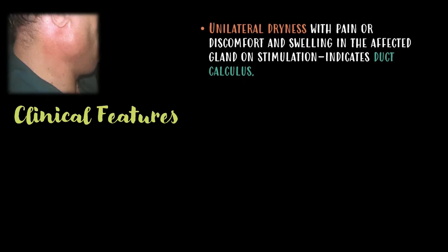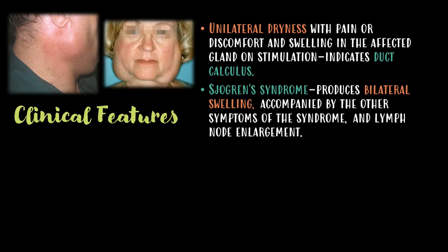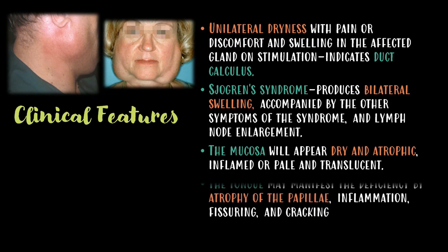The clinical features include unilateral dryness with pain or discomfort and swelling in the affected gland on stimulation, indicating the presence of duct calculus. In the case of Sjögren's syndrome, there is bilateral swelling accompanied by the other symptoms of the syndrome and lymph node enlargement. The mucosa will appear dry and atrophic, inflamed, or pale and translucent.